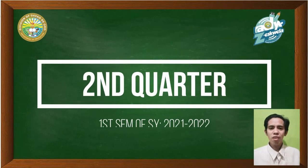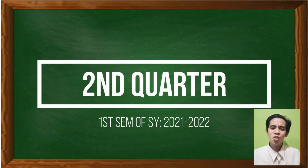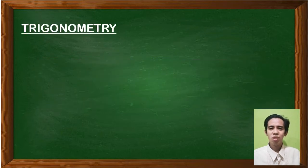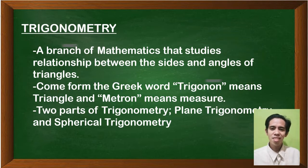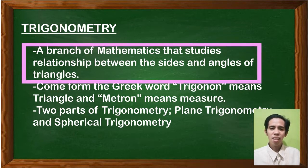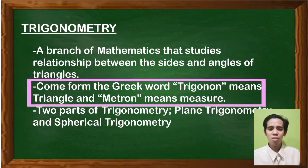Welcome to the second quarter. For this quarter, we'll be discussing the subject trigonometry. Trigonometry is a branch of mathematics that studies the relationship between the sides and angles of triangles. It came from the Greek word trigonon, which means triangle, and metron, which means measure.